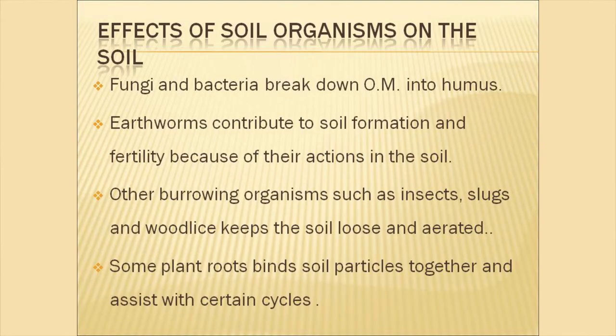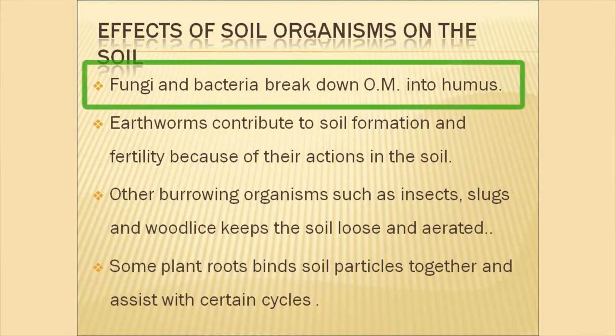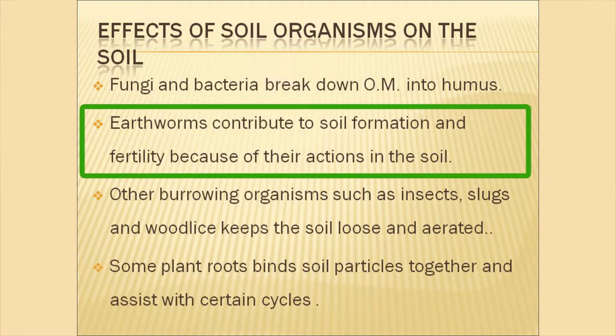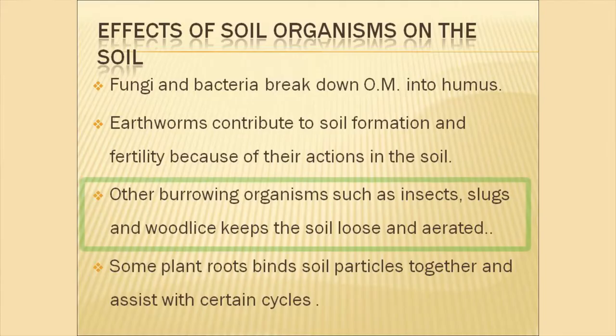Fungi and bacteria break down organic matter into humus. Earthworms contribute to soil formation and fertility through their actions in the soil — they bore down creating channels, which adds aeration and allows root penetration. Other burrowing organisms such as insects, slugs, and wood lice keep the soil loose and aerated, which is very good for root penetration.